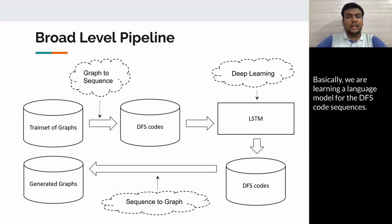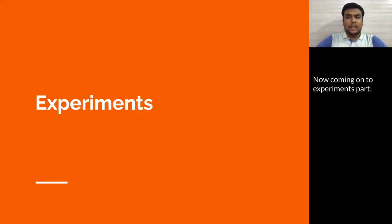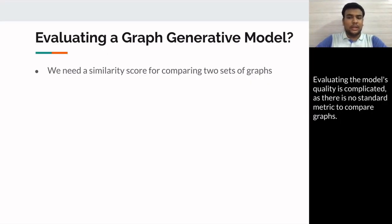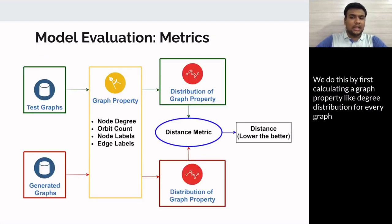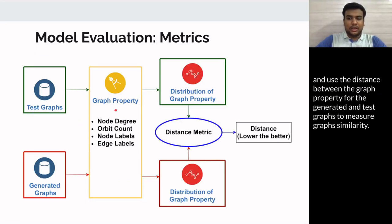Basically, we are learning a language model for the DFS code sequences. Now coming on to the experiments part, evaluating the model's quality is complicated as there is no standard metric to compare graphs. We do this by calculating graph properties like degree distribution for every graph and then use the distance between the graph property for generated and the test graphs to measure the graph similarity.